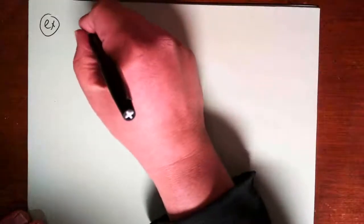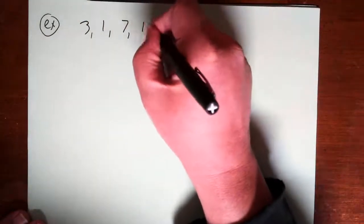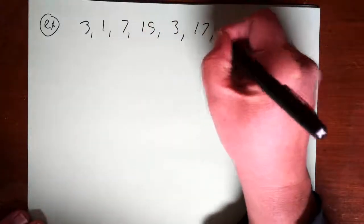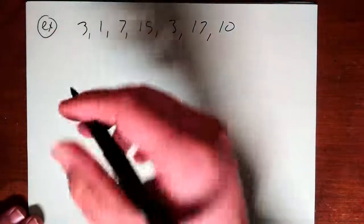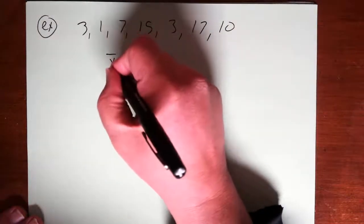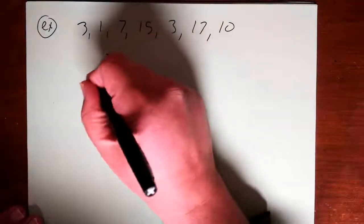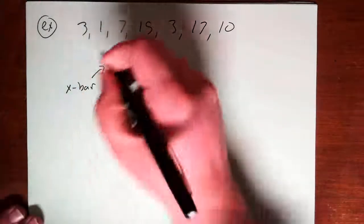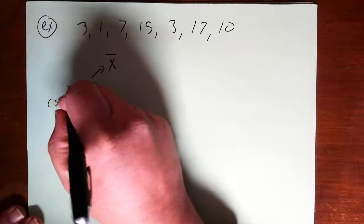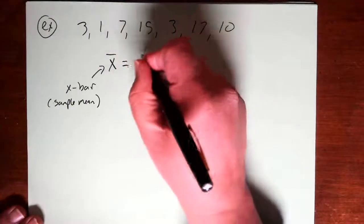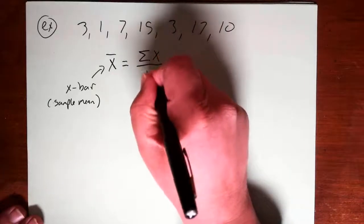We'll do this a couple of times. For our first data set we'll use: 3, 1, 7, 15, 3, 17, and 10. The mean is the average value. I'll use the notation x-bar — that's x with a bar over it — which stands for the sample mean. The formula is: add up the values in the sample and divide by n, where sigma means add and n is the number of values in the sample.